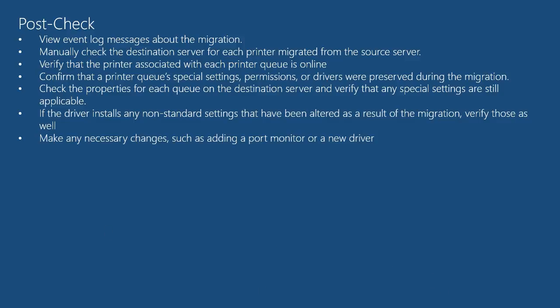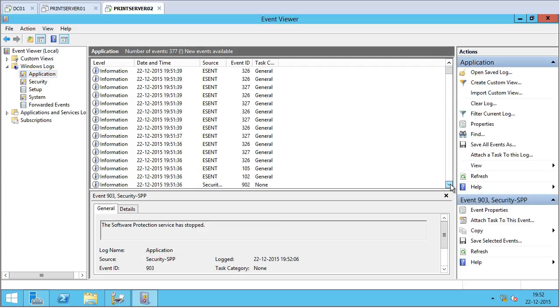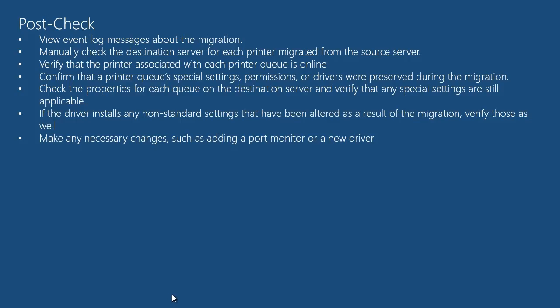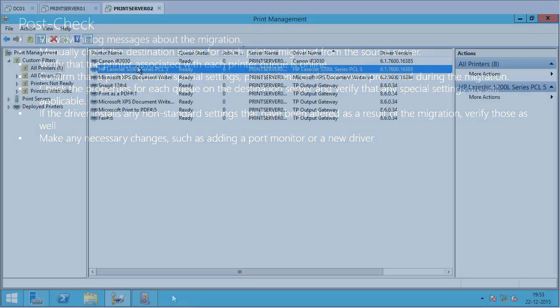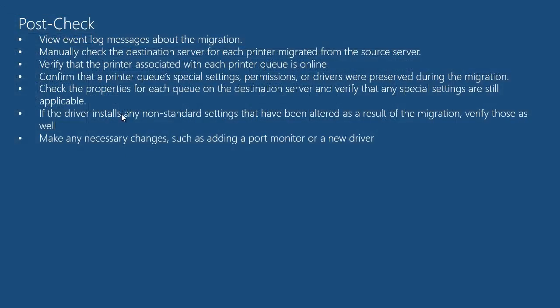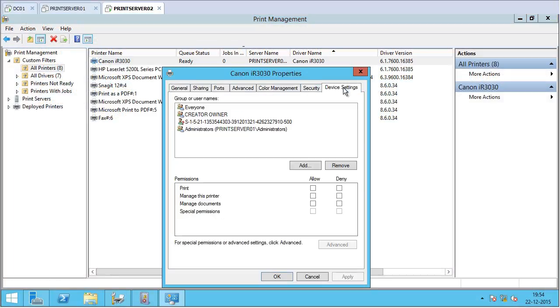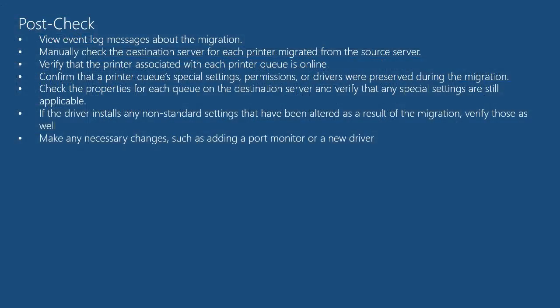There are some post-migration checks to perform: check your event log messages about the migration for any warnings, manually check each printer on the destination server, verify print queues are online, and check that special printer settings, permissions, and configurations have been preserved. You also need to check if driver installation changed any non-standard configuration, and make any necessary changes such as adding a port monitor or a new driver. This is how you migrate printers from Windows Server 2008 R2 to Windows Server 2012 R2. I hope you like this video — please subscribe to my channel for more videos like these.